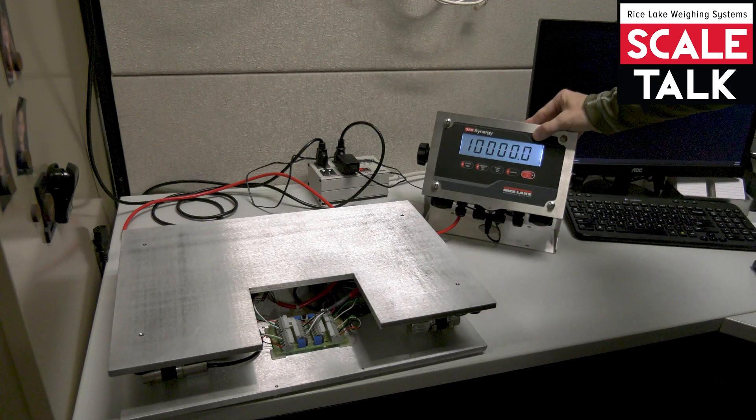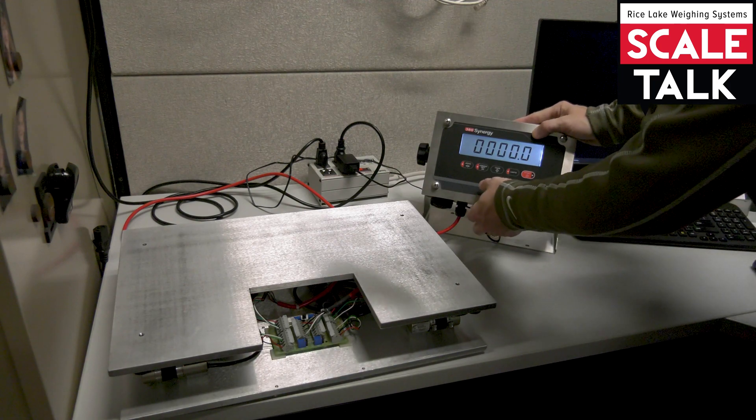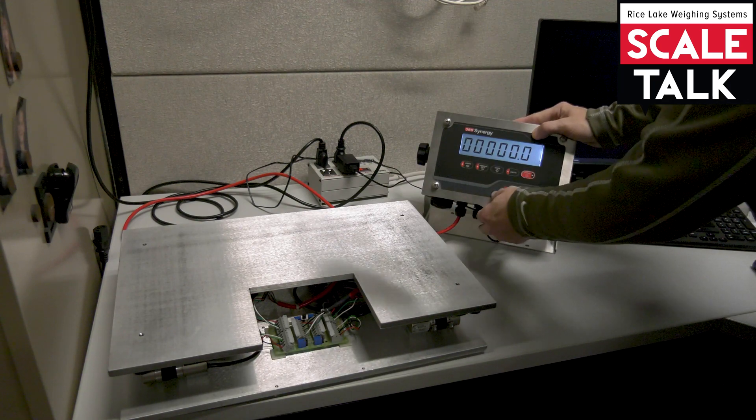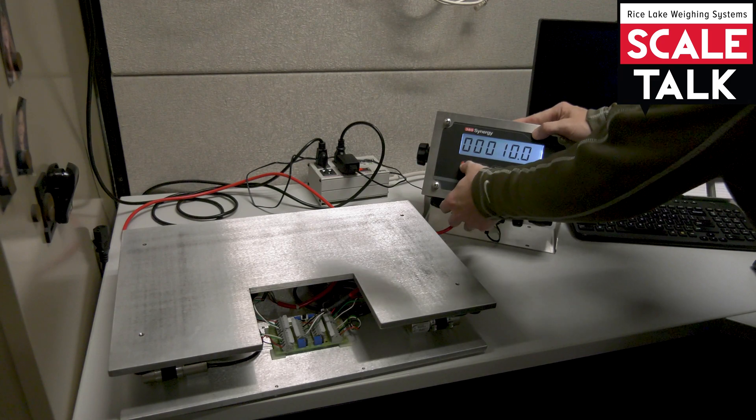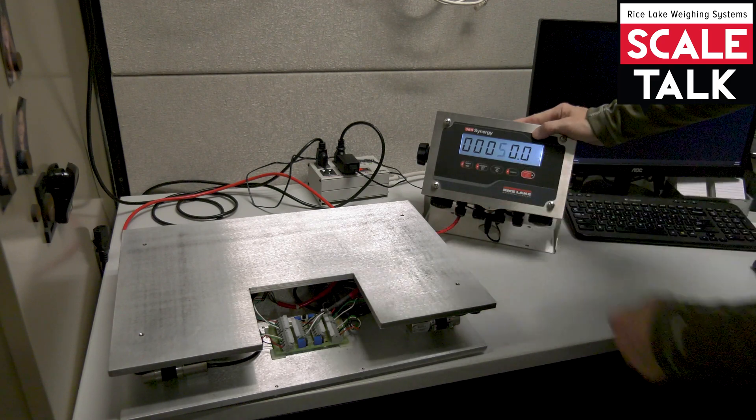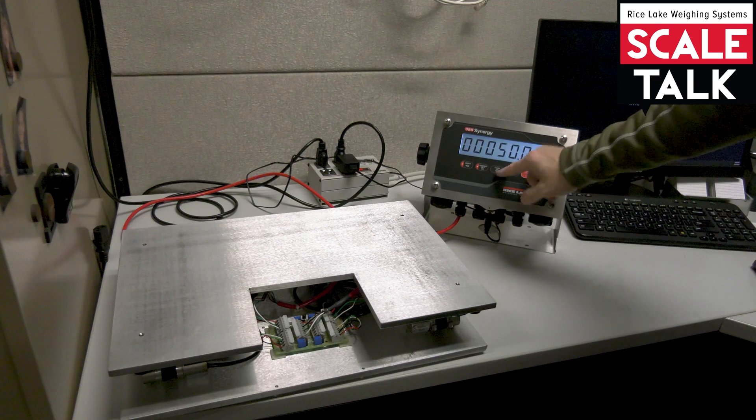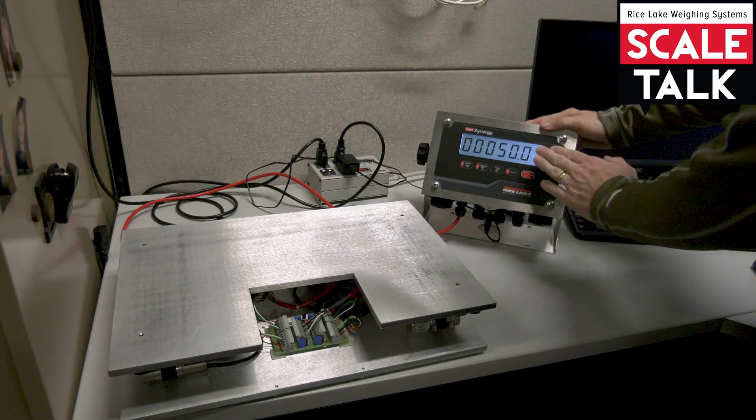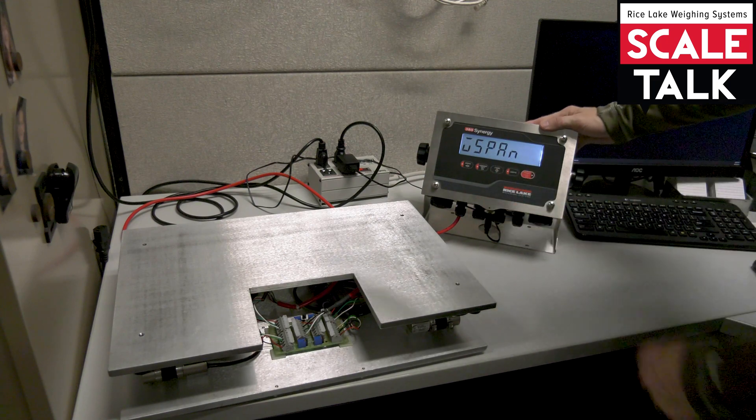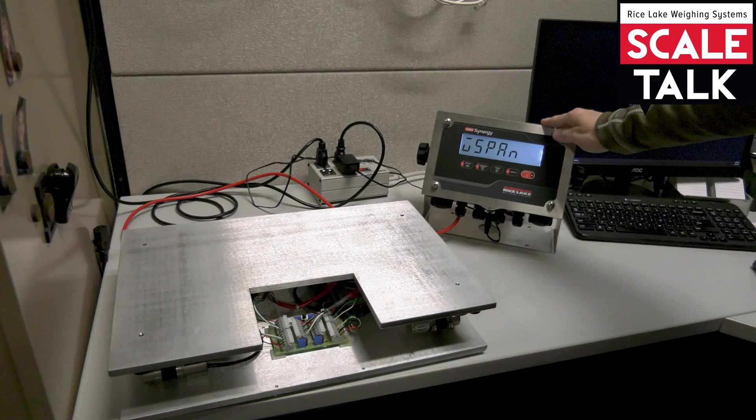We see the default of 10,000 pounds and just like the capacity, we're going to go ahead and change this to say 50. Here we go. I press tear. Decimal begins to blink. I don't need to change that. I'll press tear one more time and that'll move us to the W span.